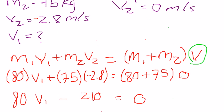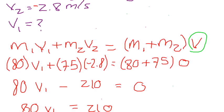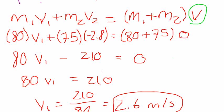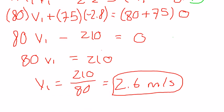When you plug in all the givens, we have to solve for the initial velocity of the Hokie linebacker, and the answer is 2.6 meters per second.